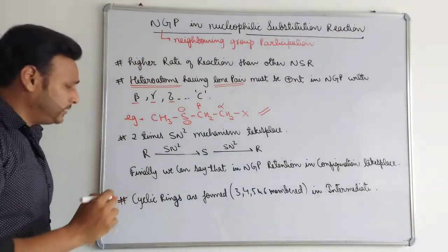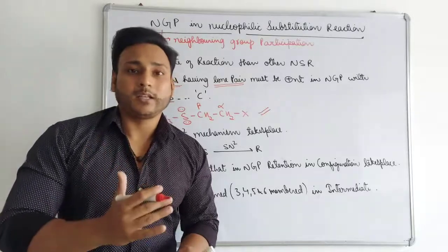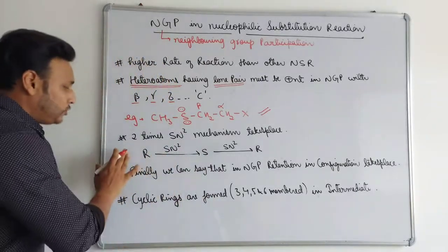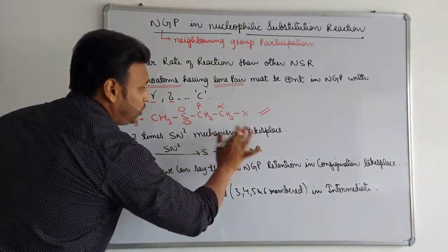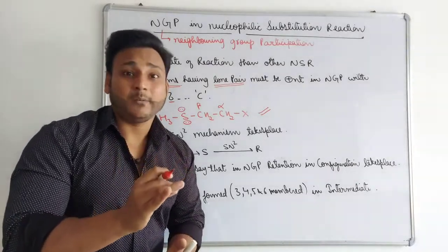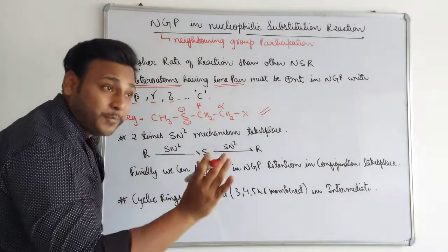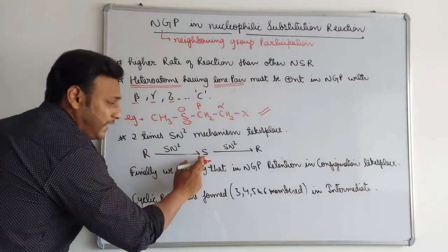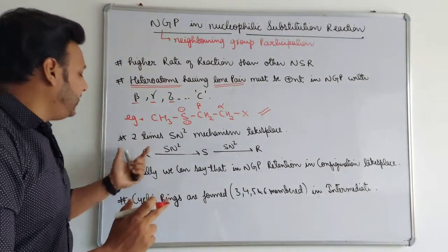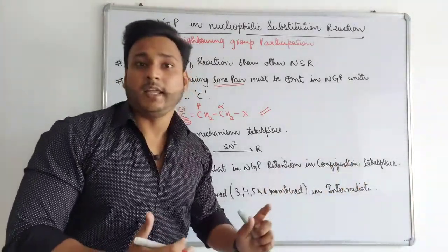One more important thing: two types of SN2 mechanisms take place in NGP. Whenever there is neighboring group participation in a nucleophilic substitution reaction, there are two SN2 reactions. As you know, in SN2 reactions, if there is a chiral carbon, there is inversion of configuration. So here, if your compound is chiral, it will go from R to S in the first SN2, and then from S back to R in the second SN2.